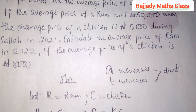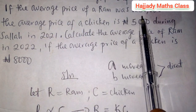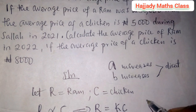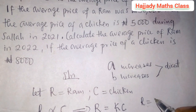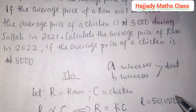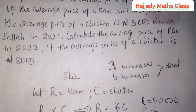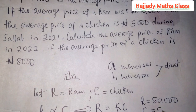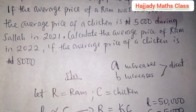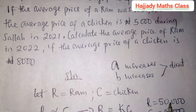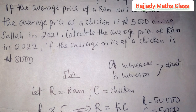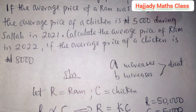The question says that if the average price of a gram was 50,000, we need to note that condition. That is, when R is 50,000, then C is 5,000 — that is the first condition, in year 2021. The price of a gram is 50,000 while the average price of a chicken is 5,000.